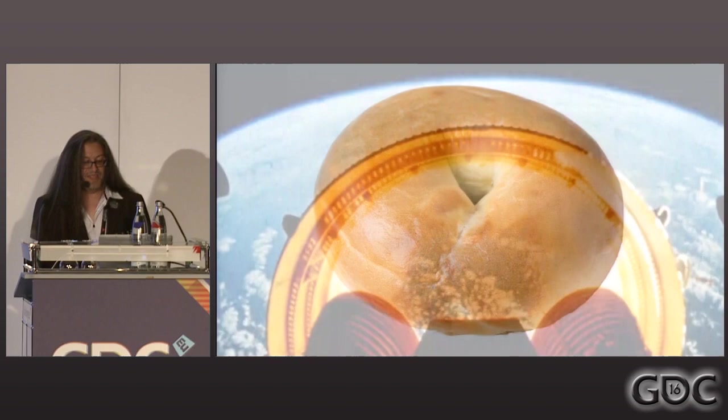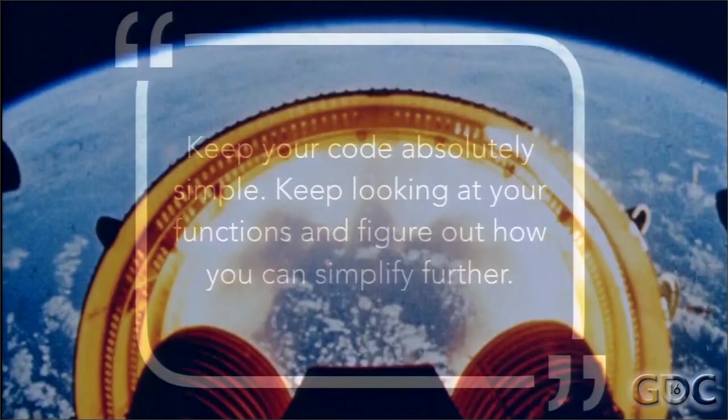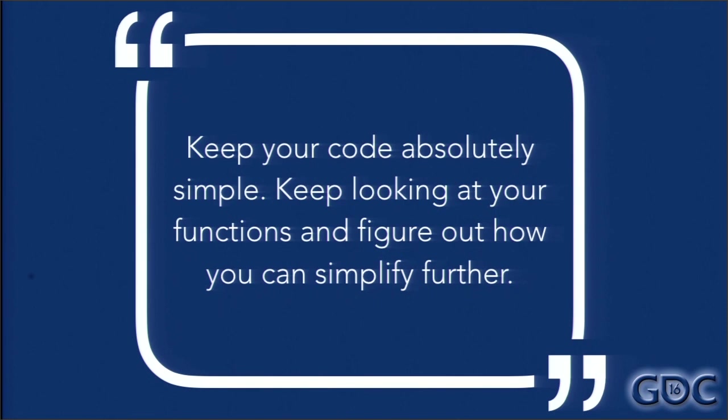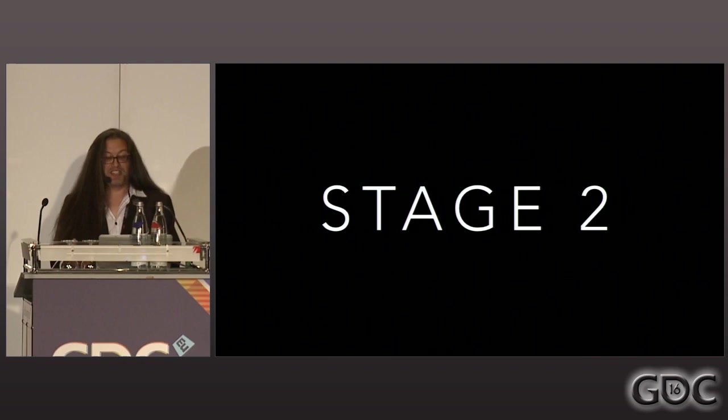So after 1991, id Software's first stage of company development was complete, and another important principle was in effect: keep your code absolutely simple. Keep looking at your functions and figure out how you can simplify even further. We wrote all of the games that we made up to and including Quake in plain C — no C++. Not saying that you shouldn't be using C++.